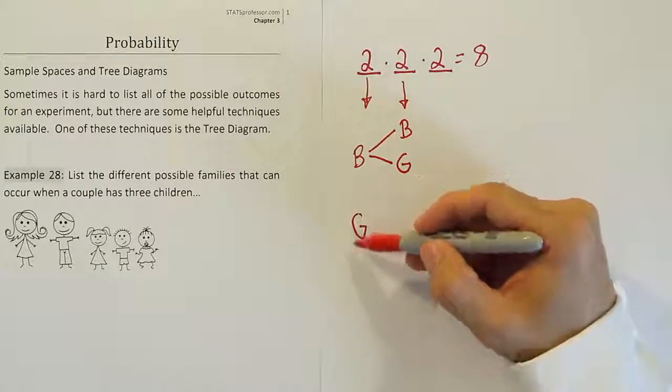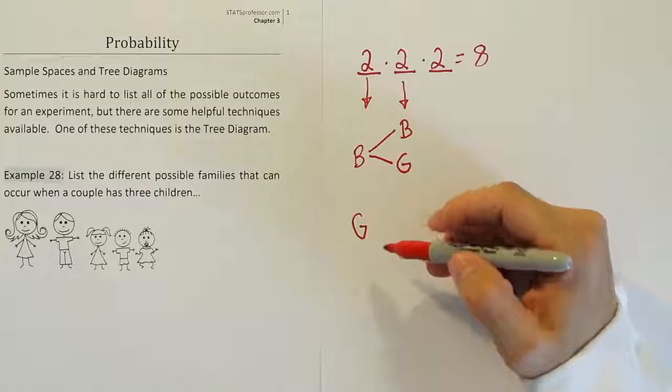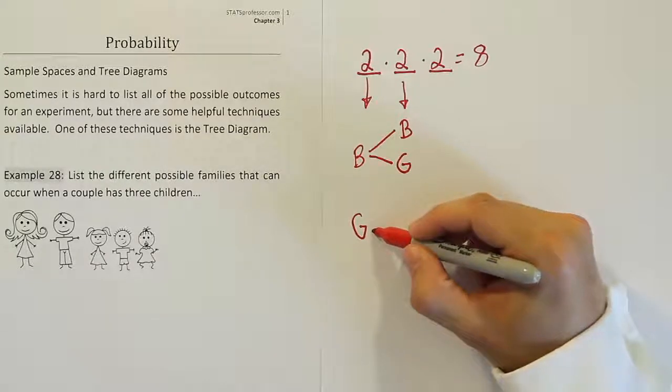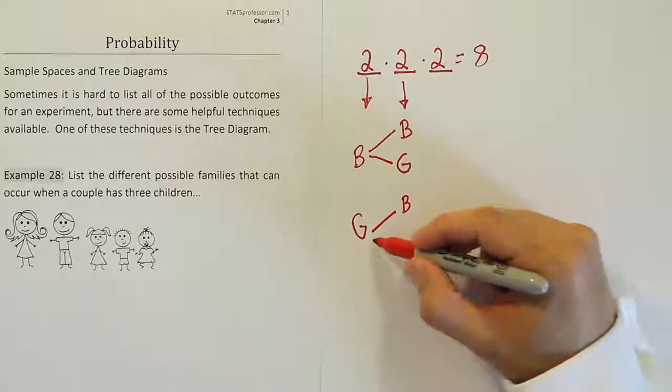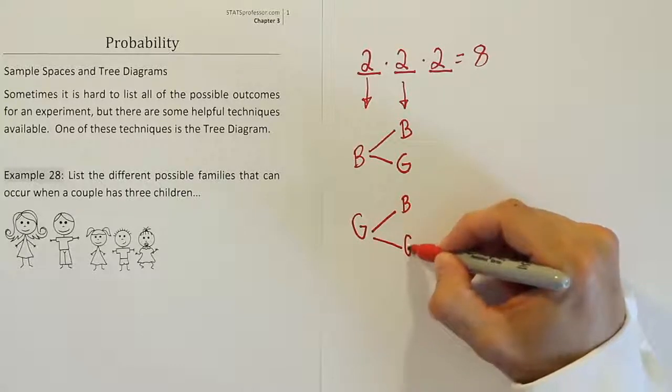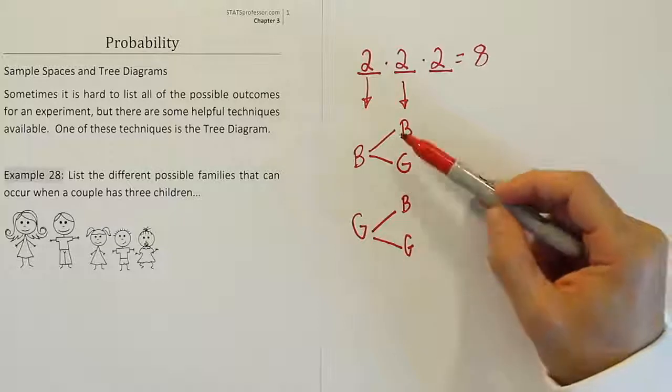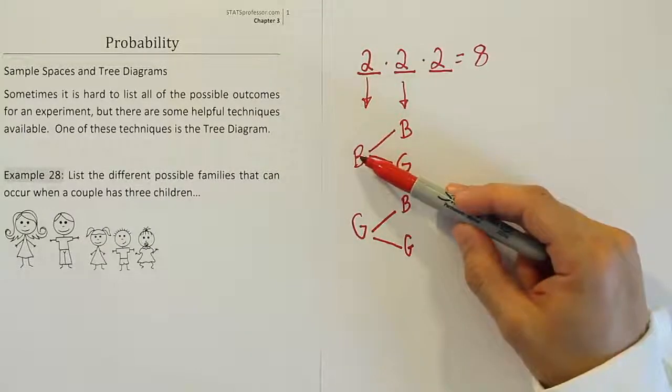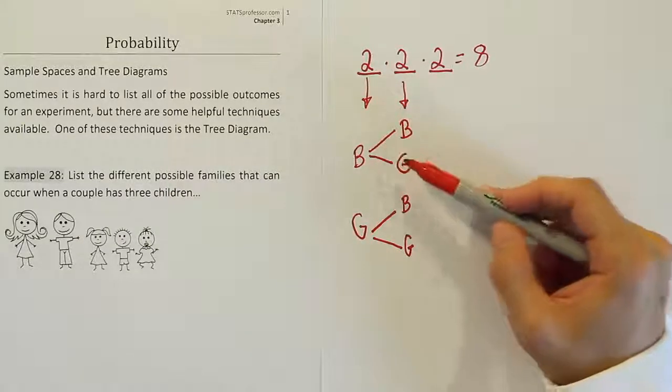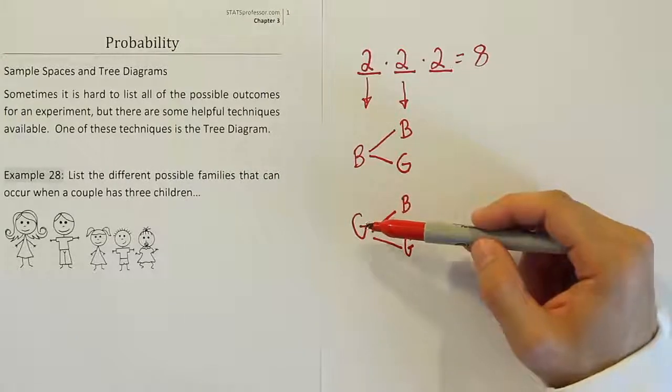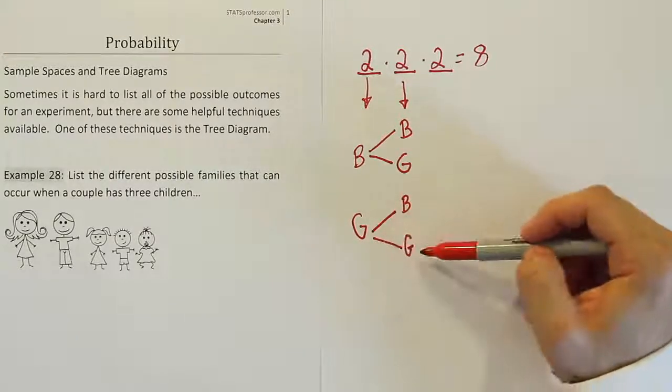But the first birth could have turned out to be a girl. And again, if the first was a girl, then the second birth could occur as a boy or a girl. So, we've listed the possible scenarios that can occur so far. If the first birth was a boy, the second one could be a boy or it could be a girl. If the first birth was a girl, the second could be a boy or it could be a girl.